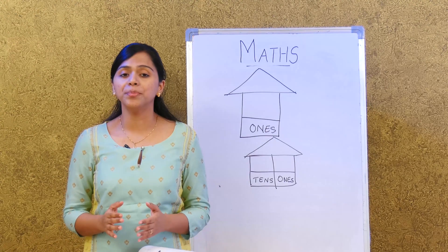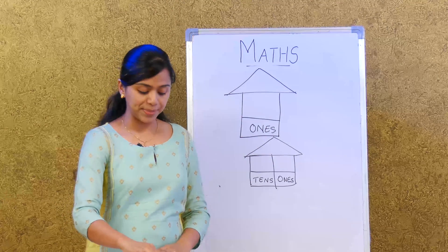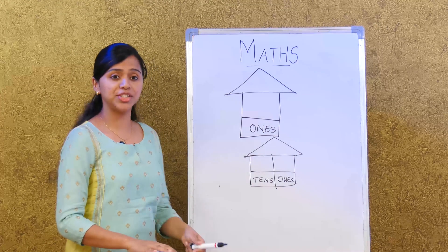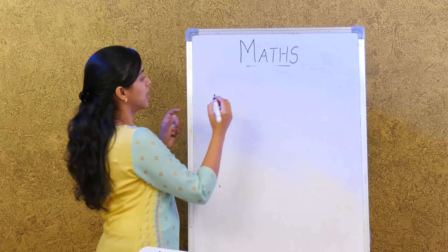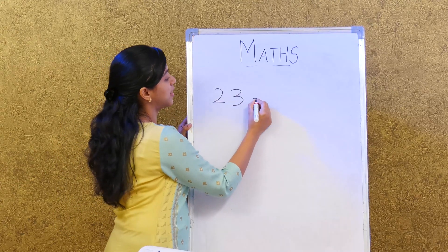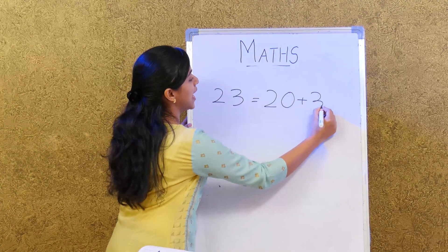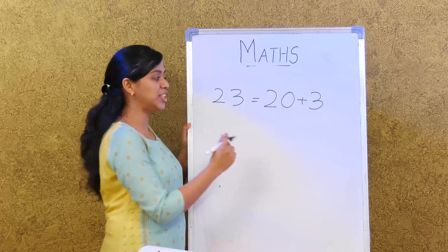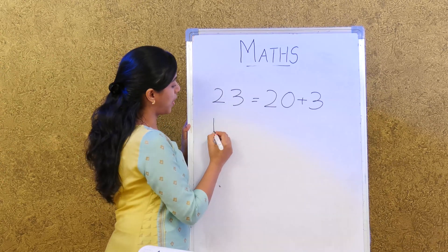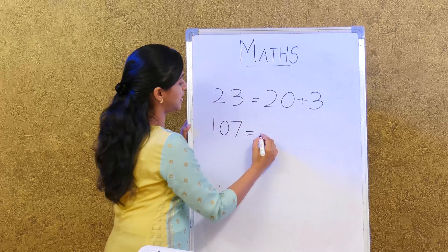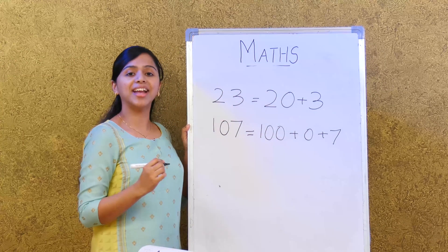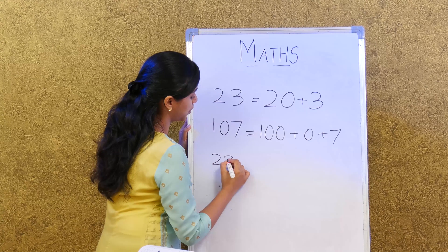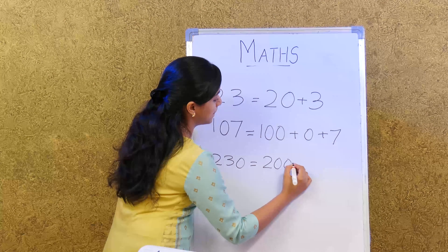Now let's learn about expanded form. In expanded form we show the value of each digit in a number. For example, twenty-three is written as 20 + 3. One hundred and seven is written as 100 + 0 + 7. Two hundred and thirty is written as 200 + 30 + 0.